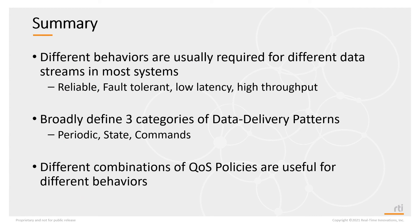In summary, different behaviors are usually required for different data streams. You may have reliable data, fault-tolerant data, low-latency data, or high-throughput requirements. We can broadly define three categories of data delivery patterns: periodic, state, and commands. There are different combinations of QoS policies that are useful for configuring these different behaviors.